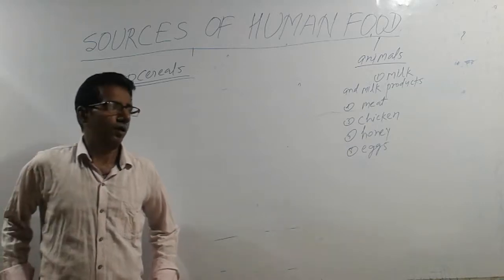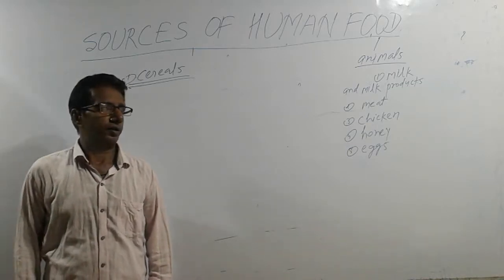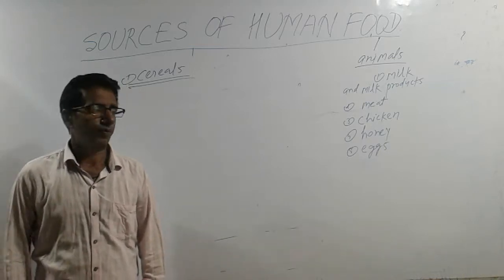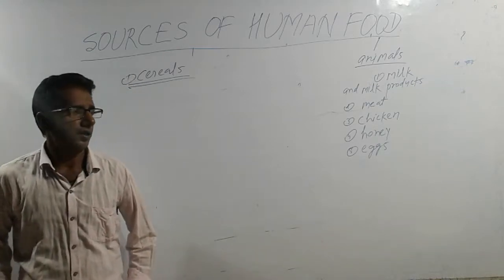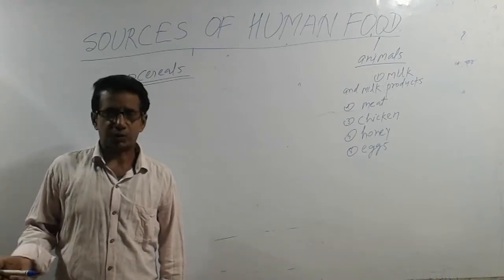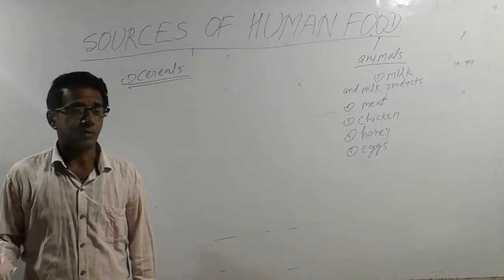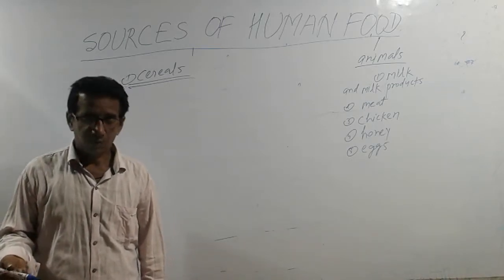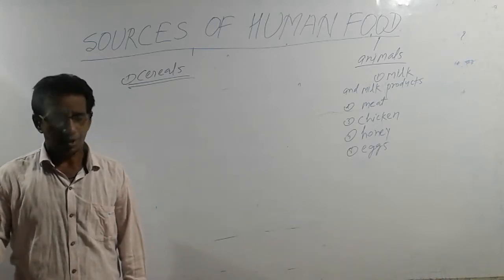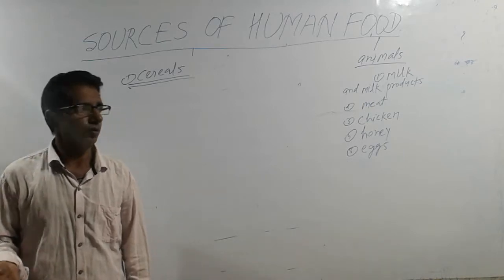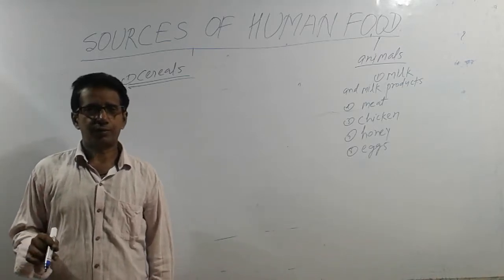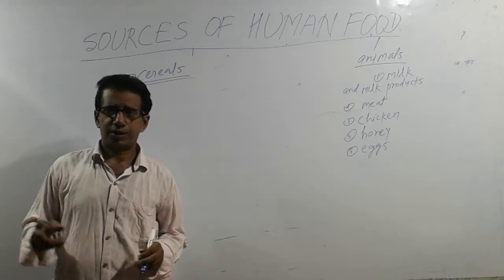Hello students, in this video we are going to study the chapter: Food - Where Does It Come From? This is part 2 of that chapter. In the first part we already studied what is food, what is the function of food, the importance of food, and variation of food. In this video we are going to study sources of human food.